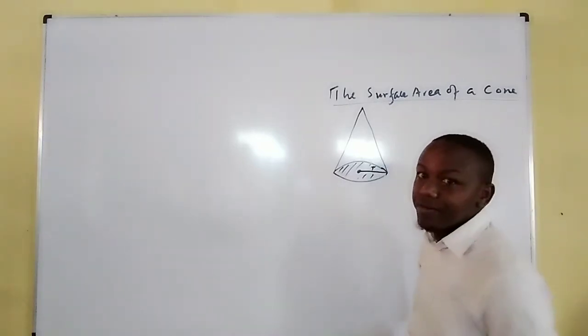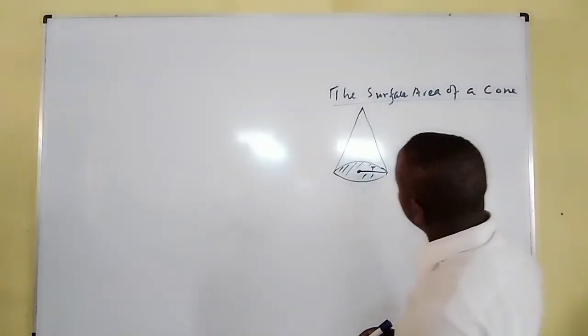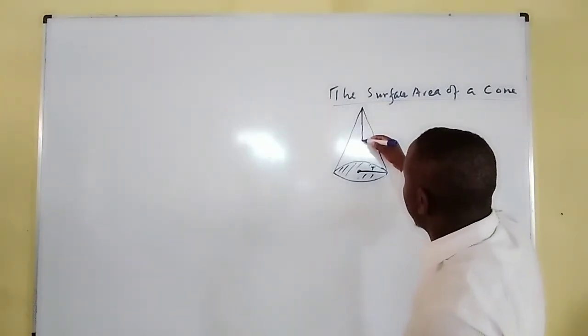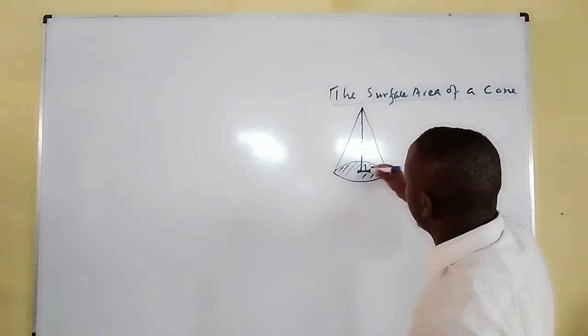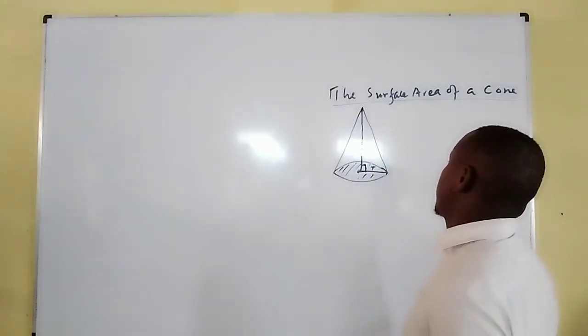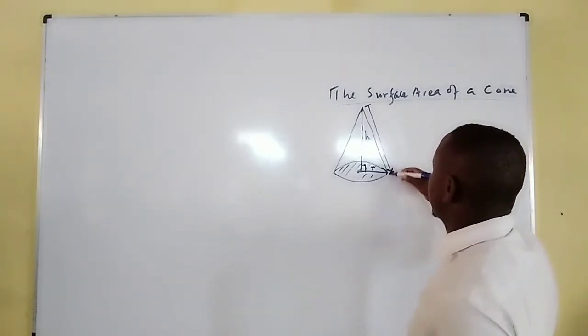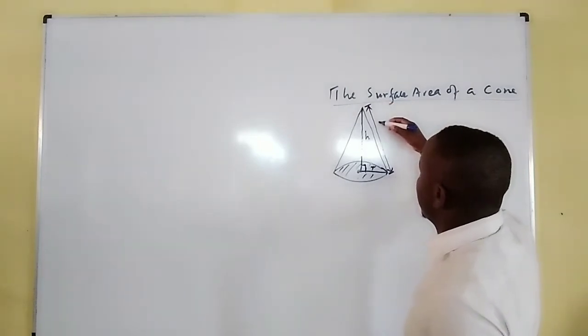This cone shape can have a vertical height from the top to the center, h. Then we have a sloping height of the cone, which is mostly abbreviated with the letter l.